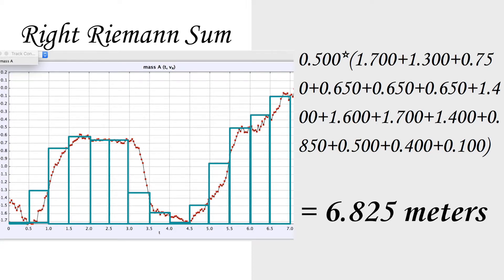So, for the height, we're using 0.5 to 7. After the calculations, we get 6.825 meters of the distance that we walked.